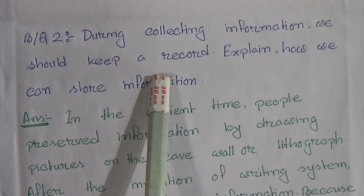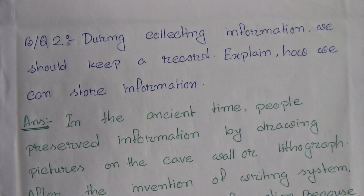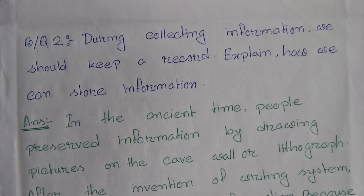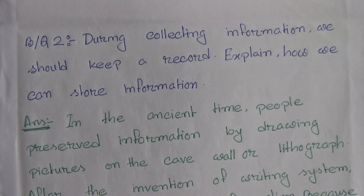Broad question 2: During collecting information, we should keep a record. Explain how we can store information. Not only do we collect information, we also have to store it. Because if we do not store this information, after a few days we will forget. Or when another generation comes, they will not get proper information about these things. So we have to store information properly.